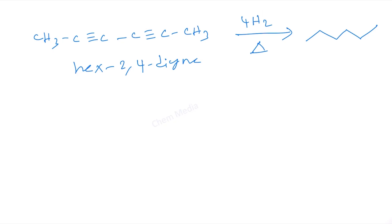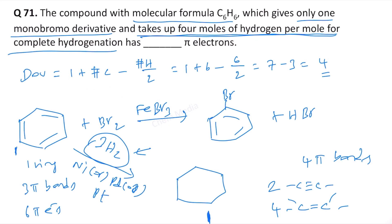Therefore, the number of pi electrons should be 8 because we have 4 pi bonds, and each triple bond has 2 pi bonds. The correct answer is 8.